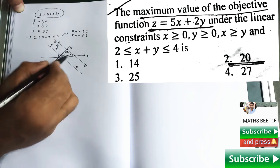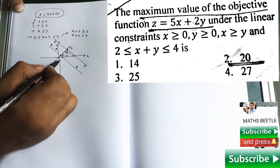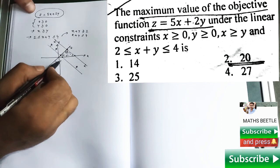That implies these four corner points are going to be the basic feasible solution of the given LPP.